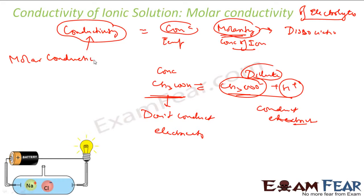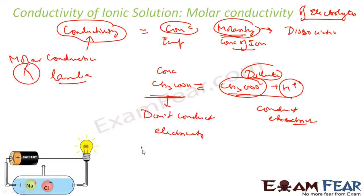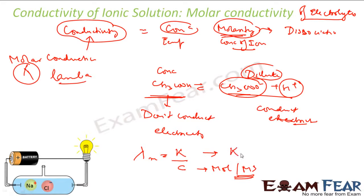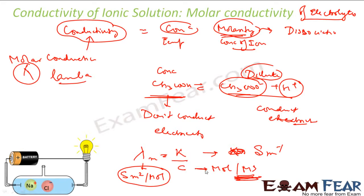Molar conductivity is written as λ (lambda). It is defined as conductivity (κ) divided by concentration. The concentration here is in moles per meter cube — not moles per liter. Conductivity κ has SI units of siemens per meter, so the unit of molar conductivity λ works out to siemens per meter squared per mole.